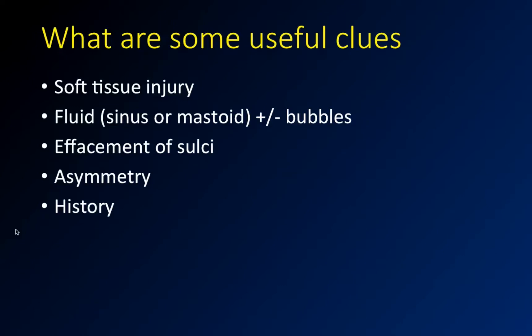When you have fluid in a sinus, especially if it has a fluid level, look closer at the walls of that sinus, look closer at the walls of the mastoid. Many times for a temporal bone fracture, all you'll see on the original CT is some kind of asymmetric fluid in the mastoid and maybe a little soft tissue swelling, and then you have to recommend getting thinner slices. Effacement of sulci — sometimes for a mass or a stroke, all you'll see in the top slices is that you can see one side of the brain better than the other, and then you scroll through and find a finding you wouldn't have seen otherwise.